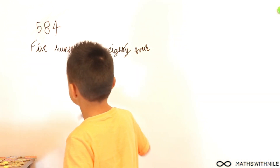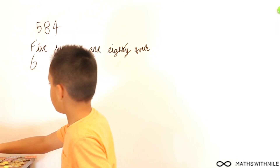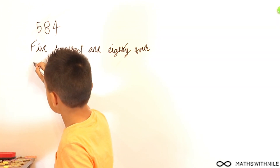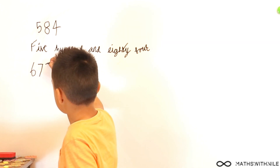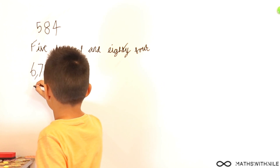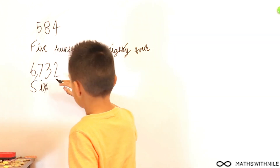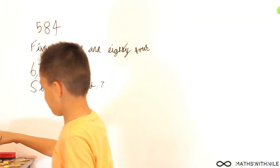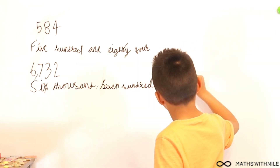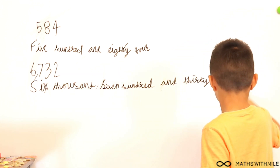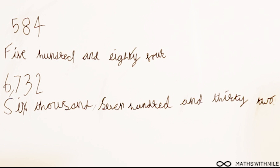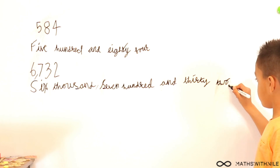Underneath that, can you write the digits? 6, 7, 3, 2. So what number is that? 6,732. Six thousand, seven hundred and thirty-two. Brilliant, good job.